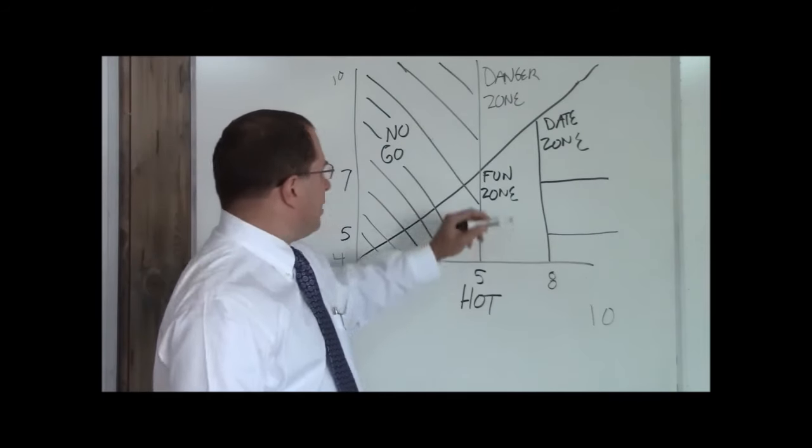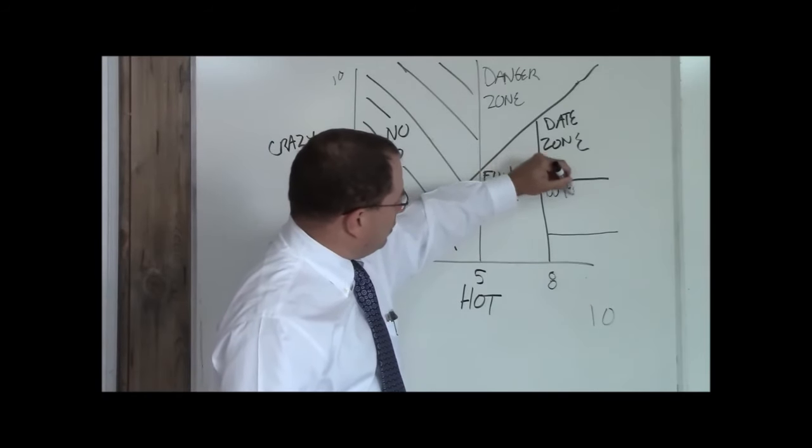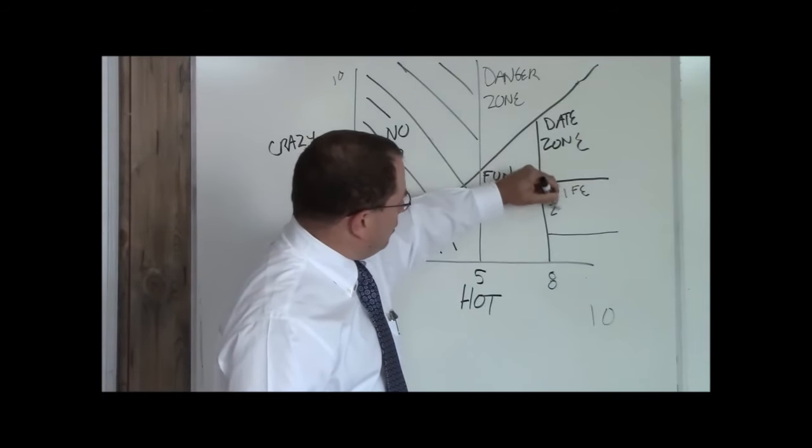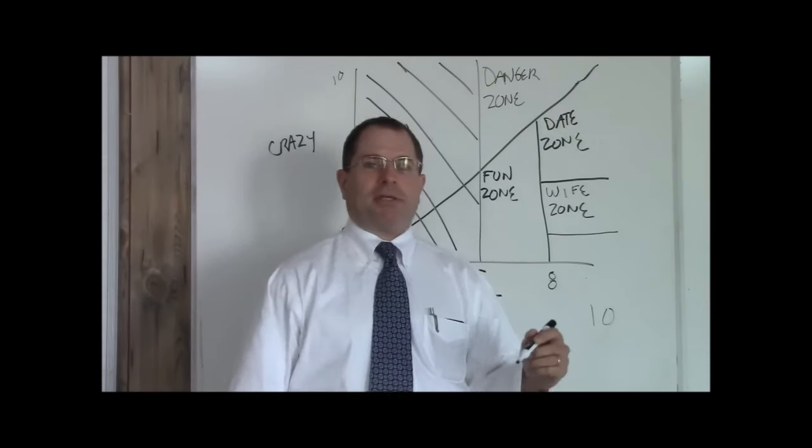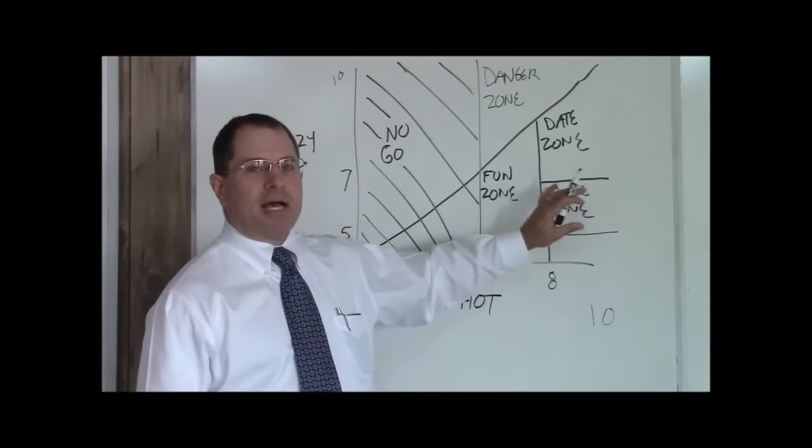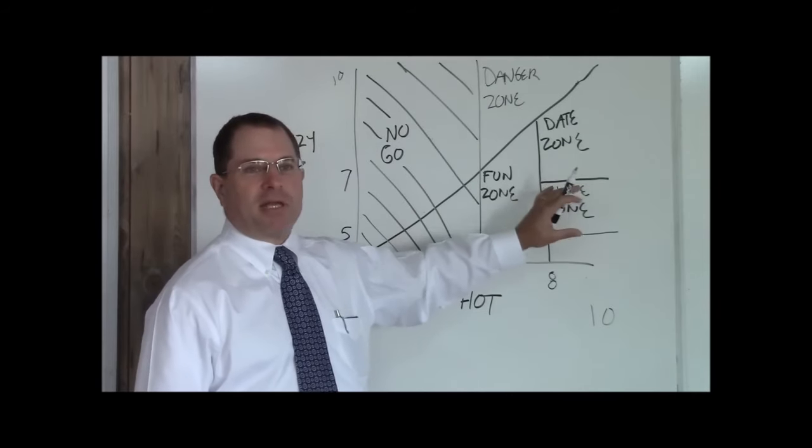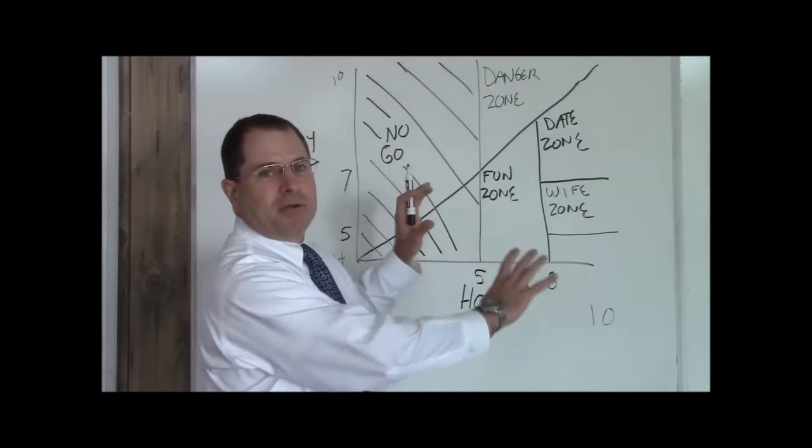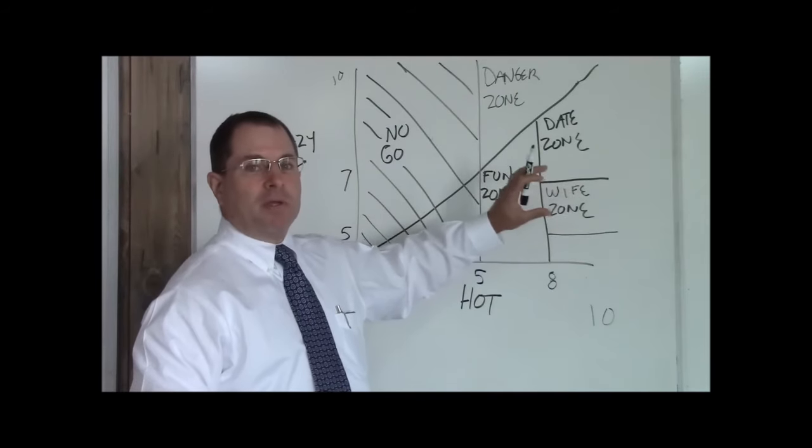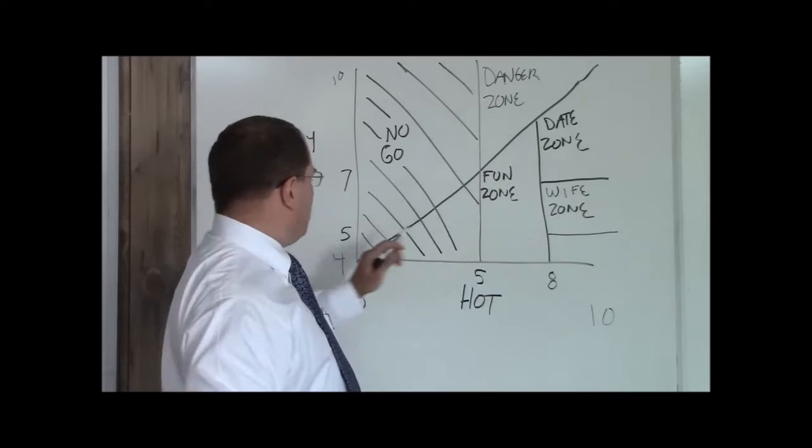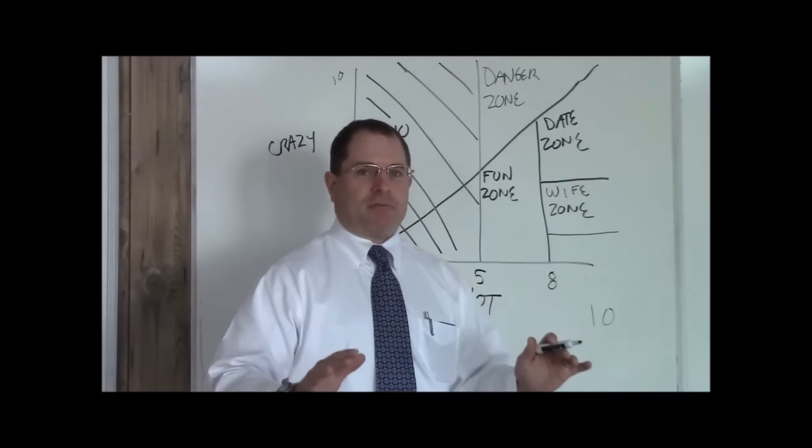Above an eight hot and between about a seven and a five crazy. This is your wife zone. When you meet this girl, you should consider a long-term relationship. This zone is not scaled to size. This is a representation and not a pie chart showing you how many of these people are out there. This is simply a representation of what you're after. You want to be five to seven crazy above an eight hot. That's your wife's zone.